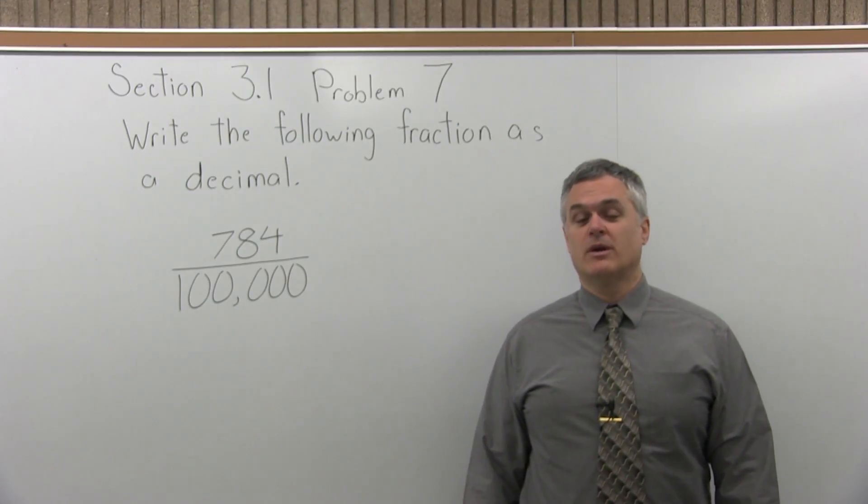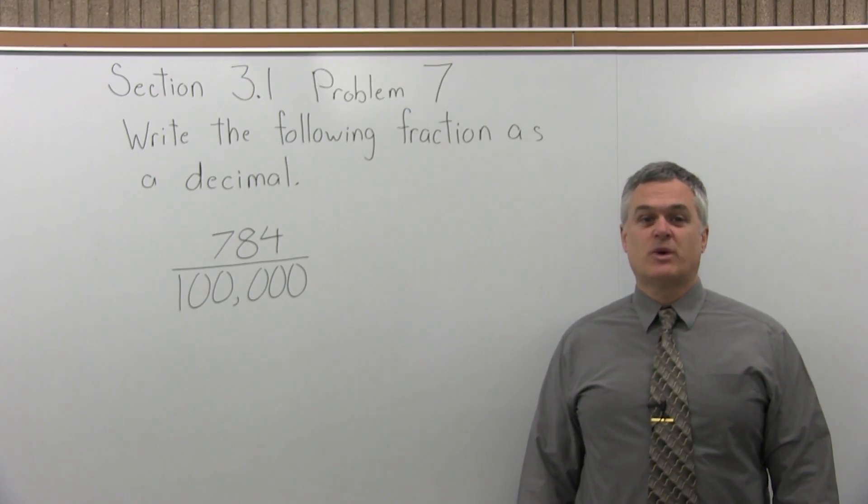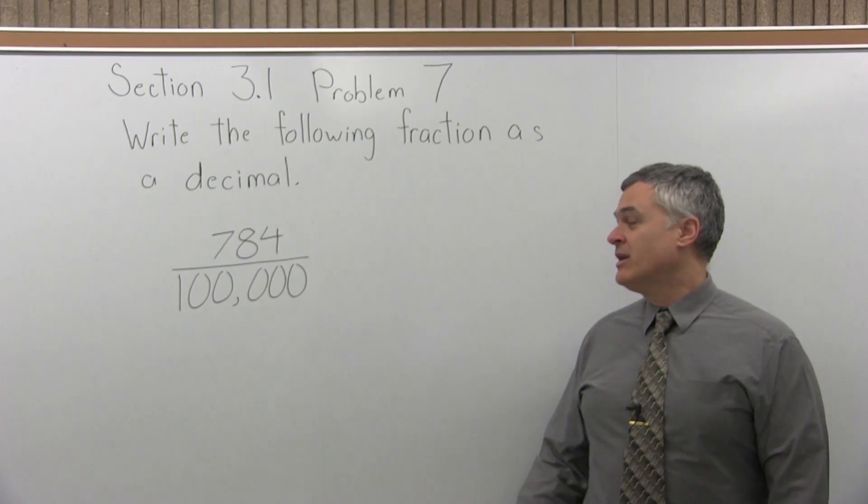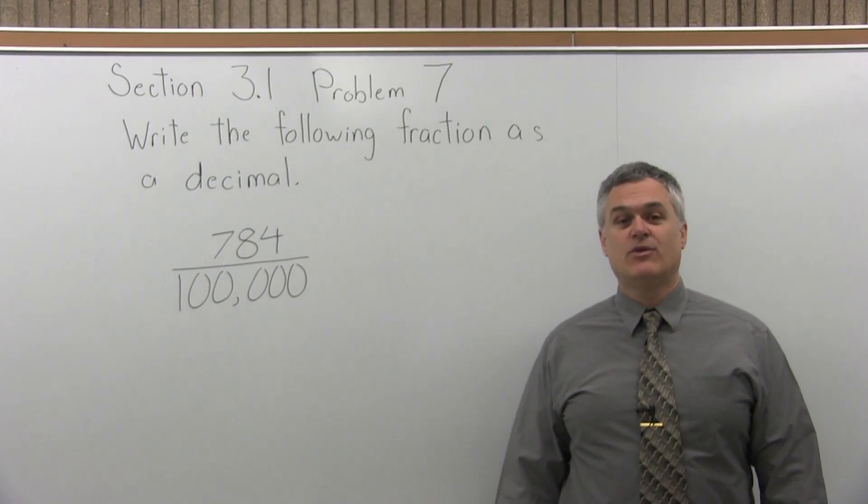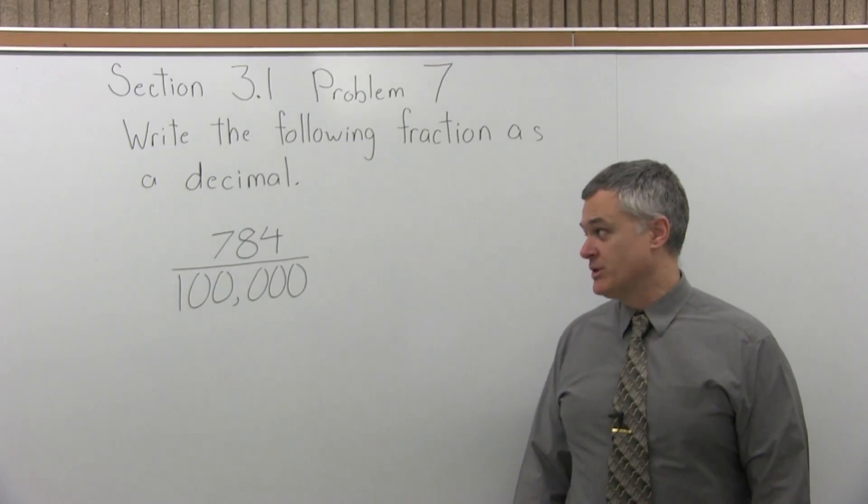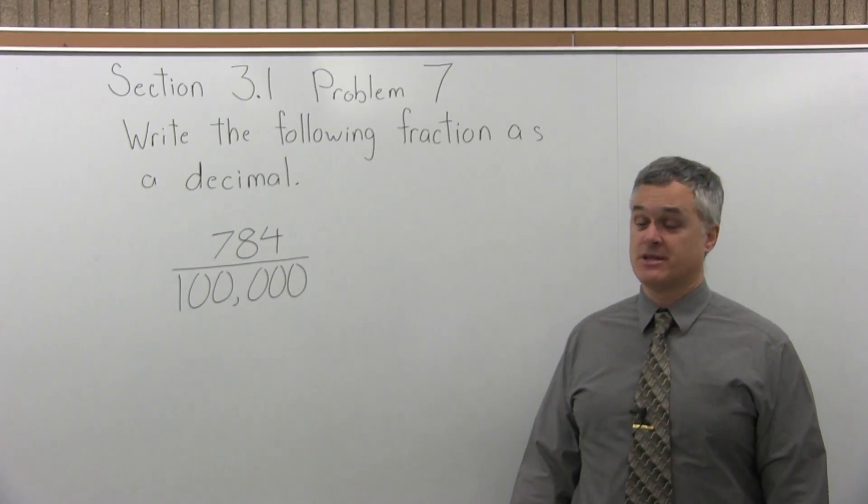This is Section 3.1, Problem 7. It says write the fraction as a decimal. And the fraction is 784 over 100,000, or 784 one hundred thousandths.